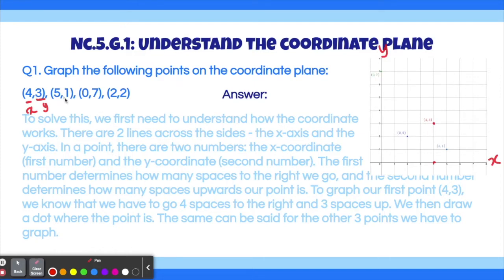The same way we can figure out the rest of these points — (5, 1), (0, 7), and (2, 2) — and they are all drawn in the graph over here.